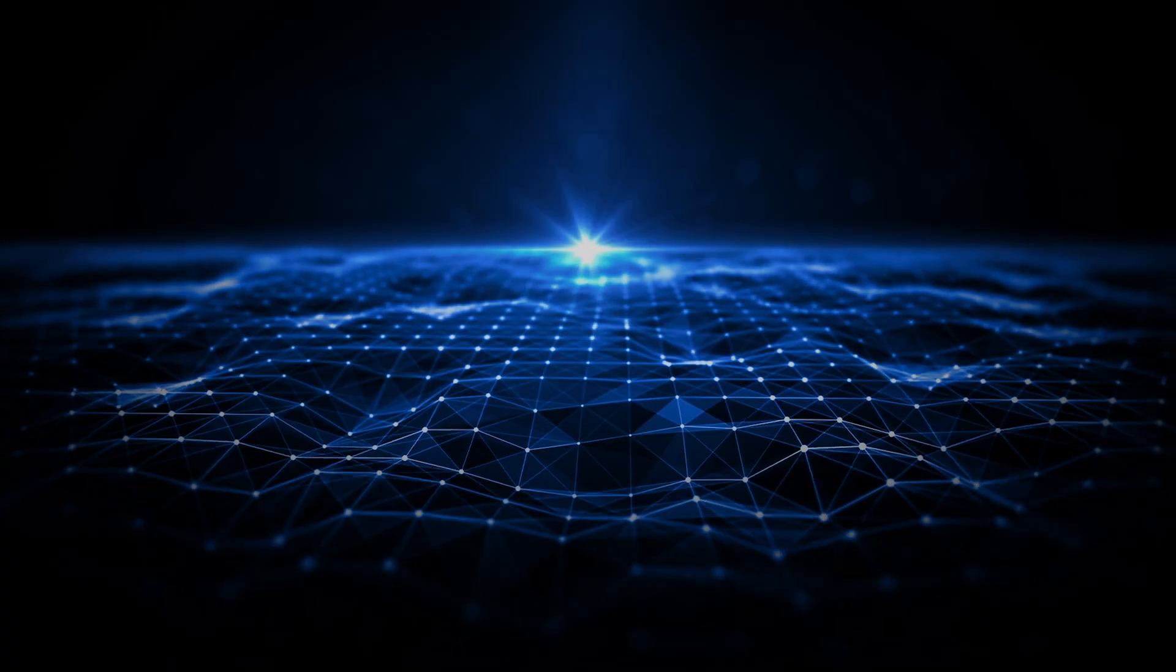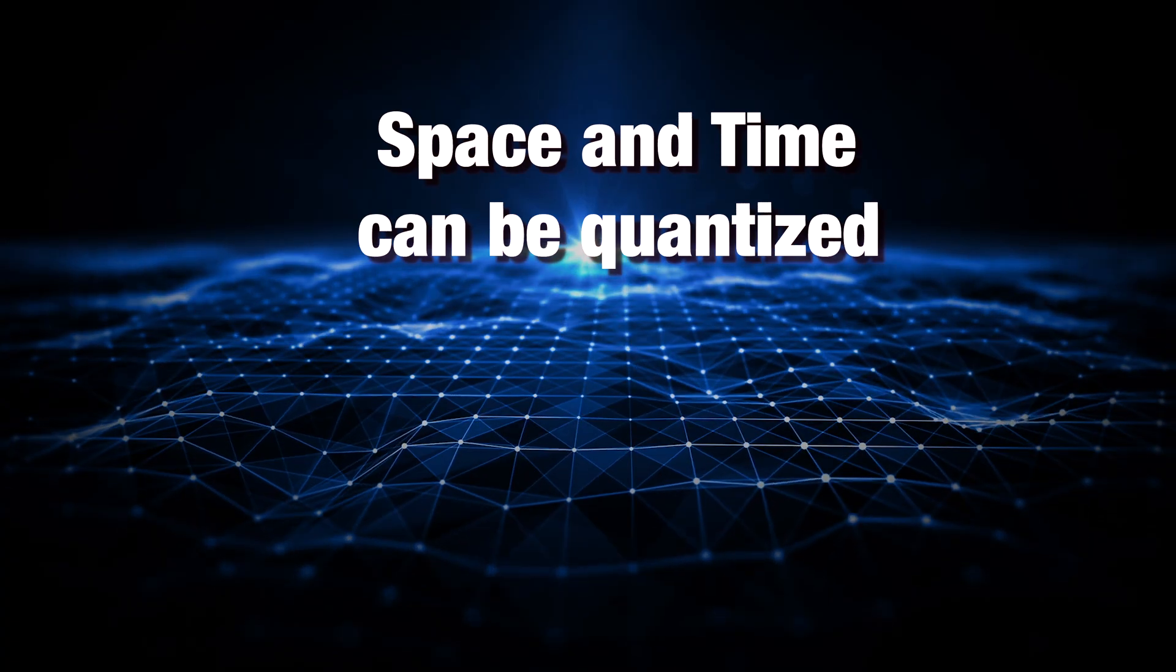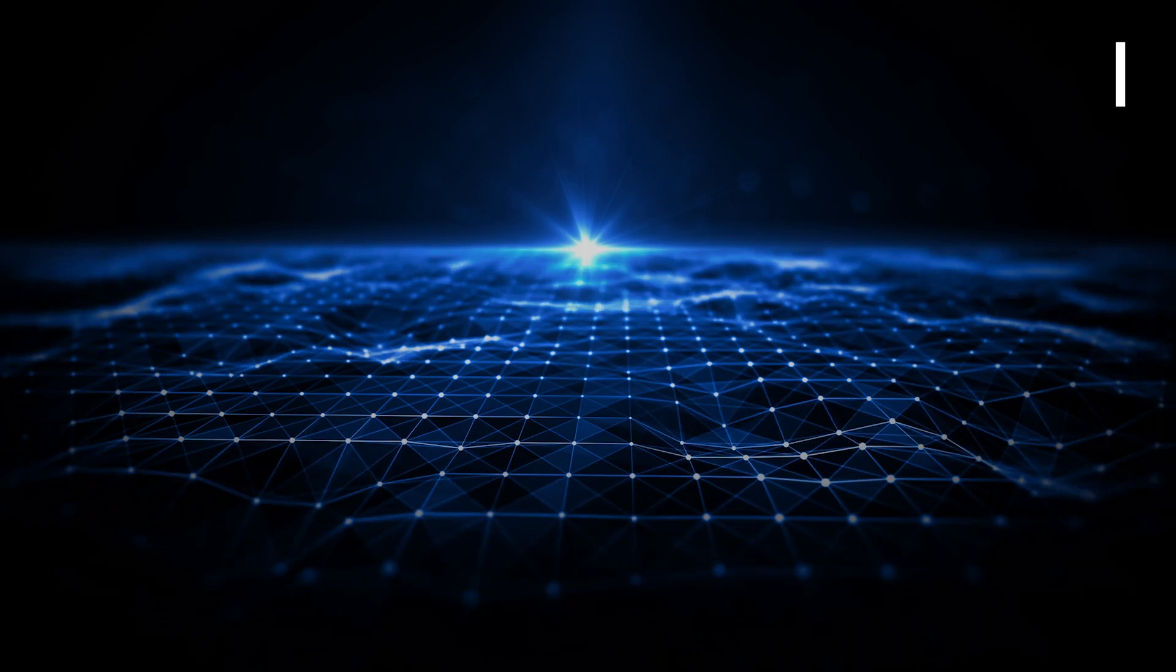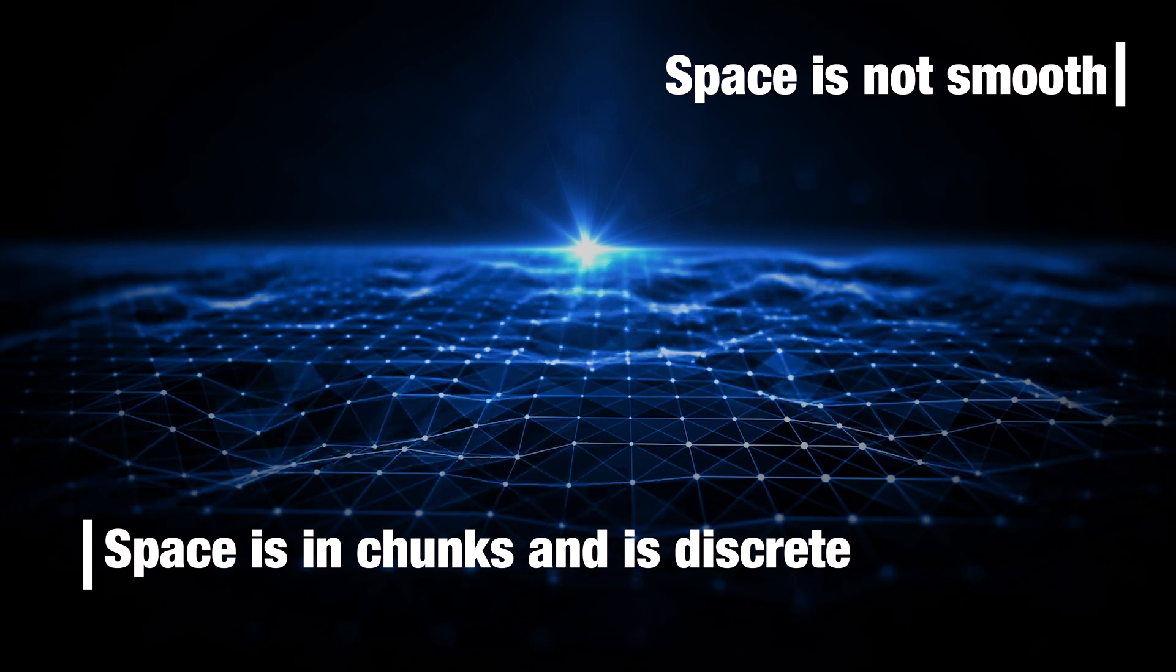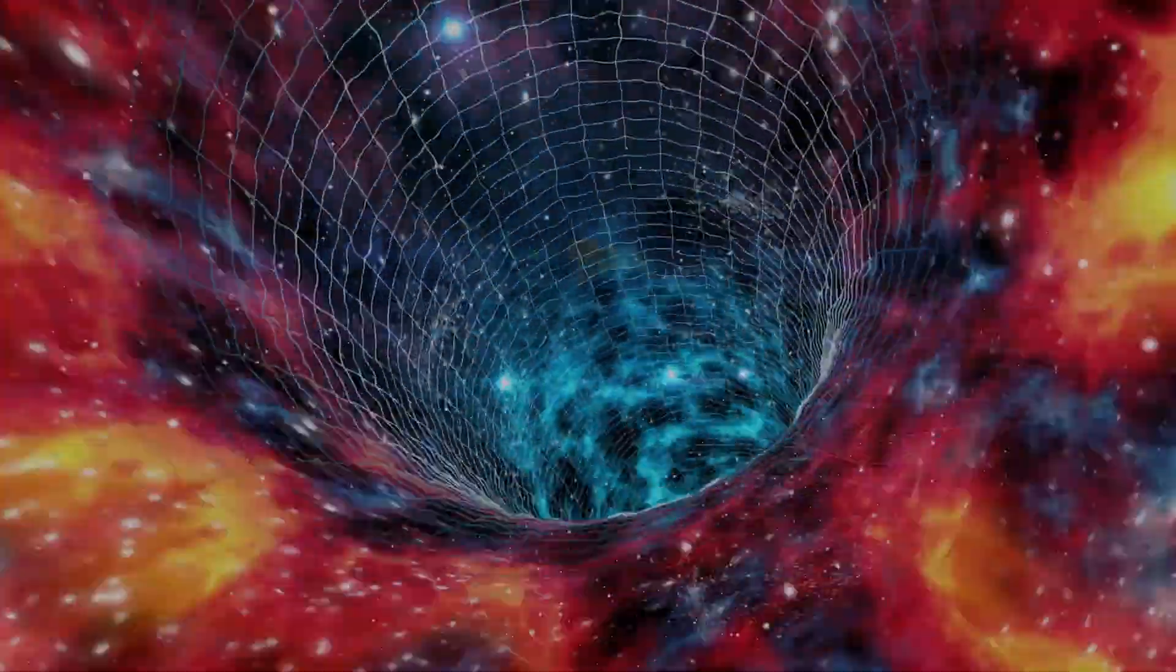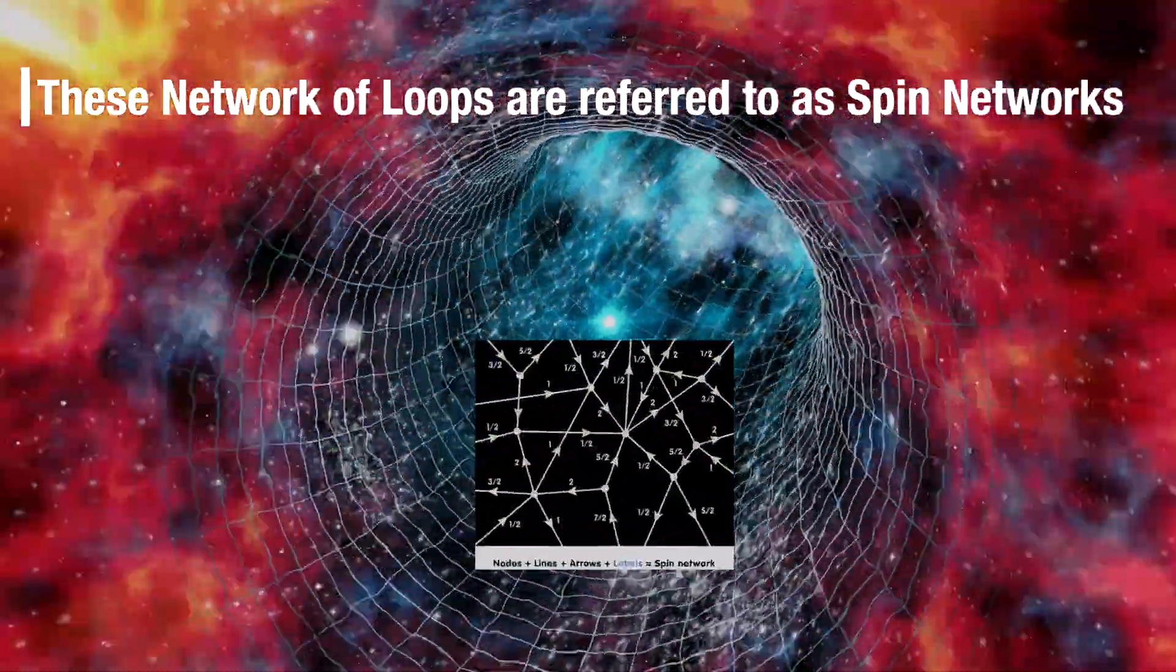If this theory is correct, it's saying that space and time can be quantized. It's saying that space isn't smooth like Einstein proposed. Rather, it's made up of chunks and that it is discrete. In fact, if we zoom into the space fabric, it's made up of loops that are connected together.